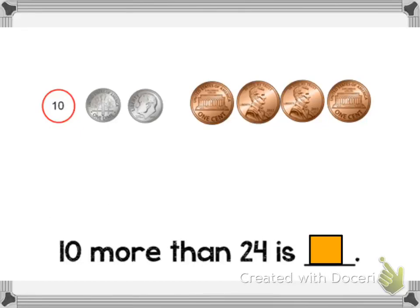Today we're talking about Module 4 Lesson 6. In this lesson we're talking about being able to identify 10 more, 10 less, 1 more, and 1 less than a two-digit number. And we're going to be using dimes and pennies to represent our tens and ones.